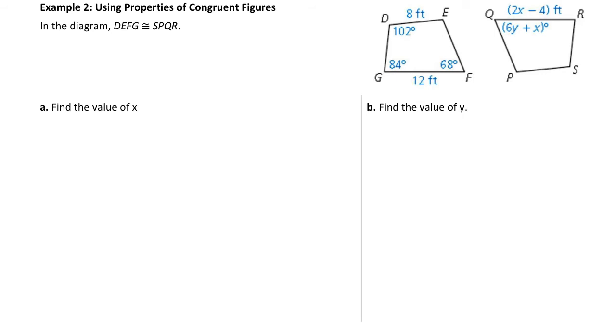I have 6y plus x, and I have 2x minus 4. So I'm going to think the equation I want to use, I'm going to use an equation using 2x minus 4. If I look at that, that is segment QR. So I've got to figure out which segment is congruent in the other shape to QR. And you look at your congruence statement, QR are the last two letters. In our congruence statement, FG are the last two letters. So QR is congruent to FG. And all I do to set up my equation, FG is 12 feet.